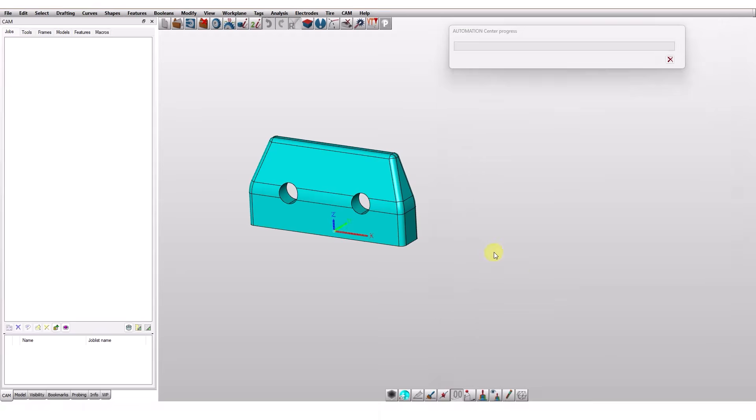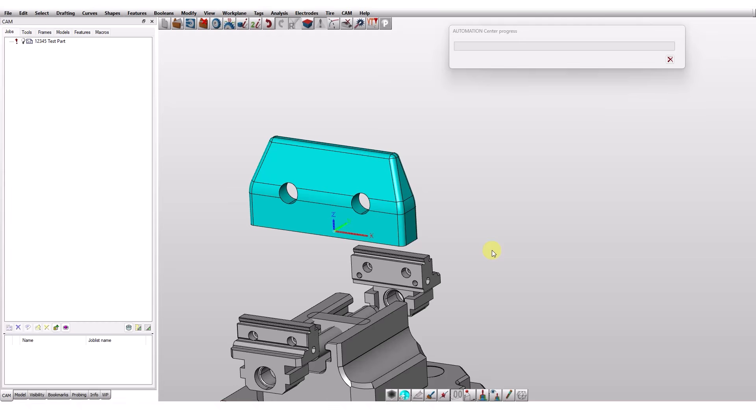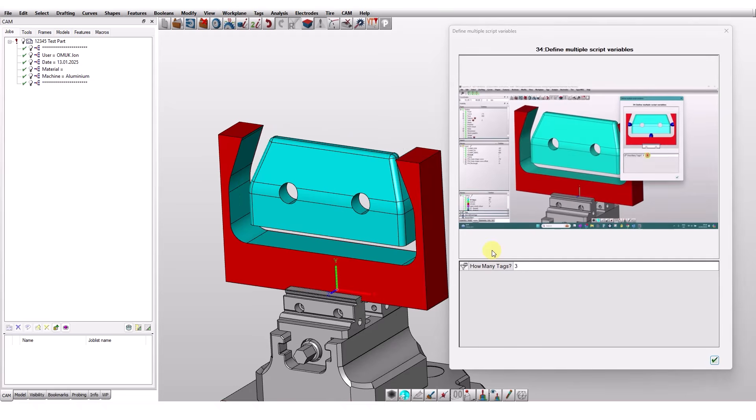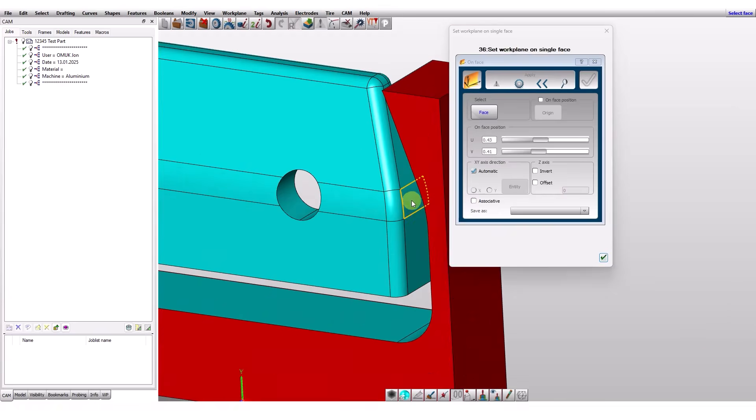One of our motorsport customers recently adopted HyperMill Automation alongside their 5-axis capabilities, and they have saved quite a lot of hours in terms of programming time. We're talking thousands of hours per year of programming time saved with HyperMill.